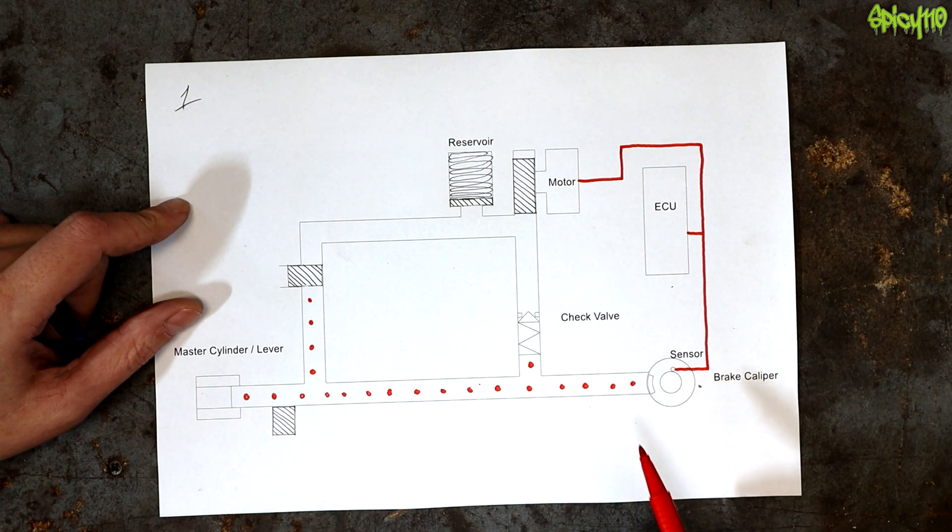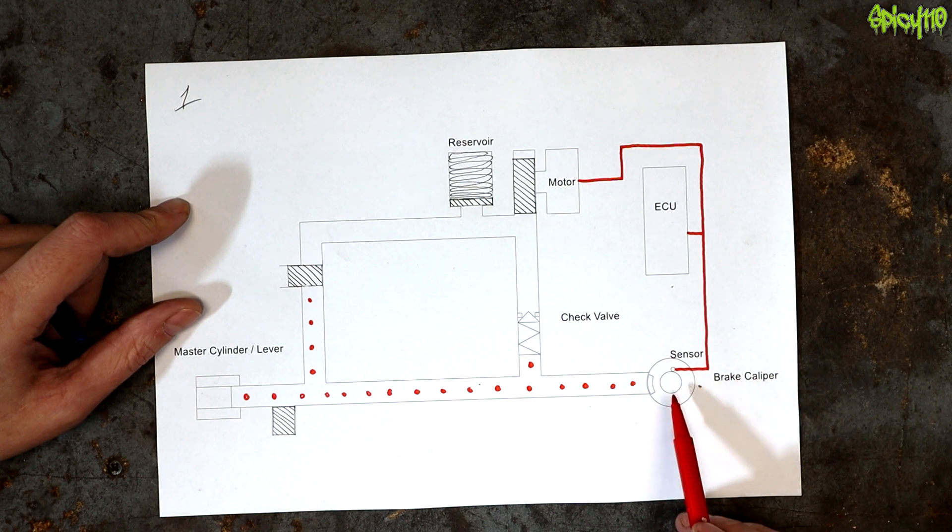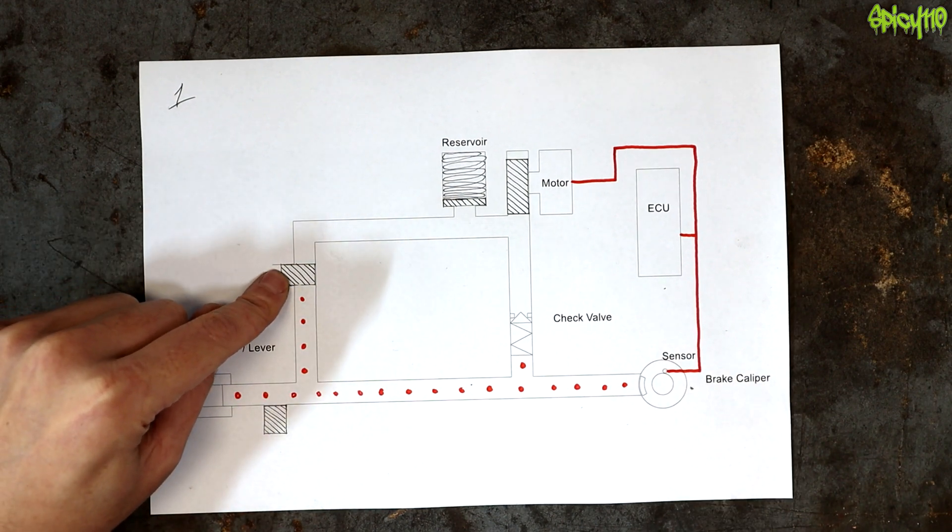Then the sensor, which is on the wheel, is noting the speed that it's spinning, and if it notices it's about to lock or it's starting to lock, it says, you don't want to be using that much braking force, buddy. Let's help you. Notice in this diagram, this is open. This is an isolation valve, and this dump valve is closed.